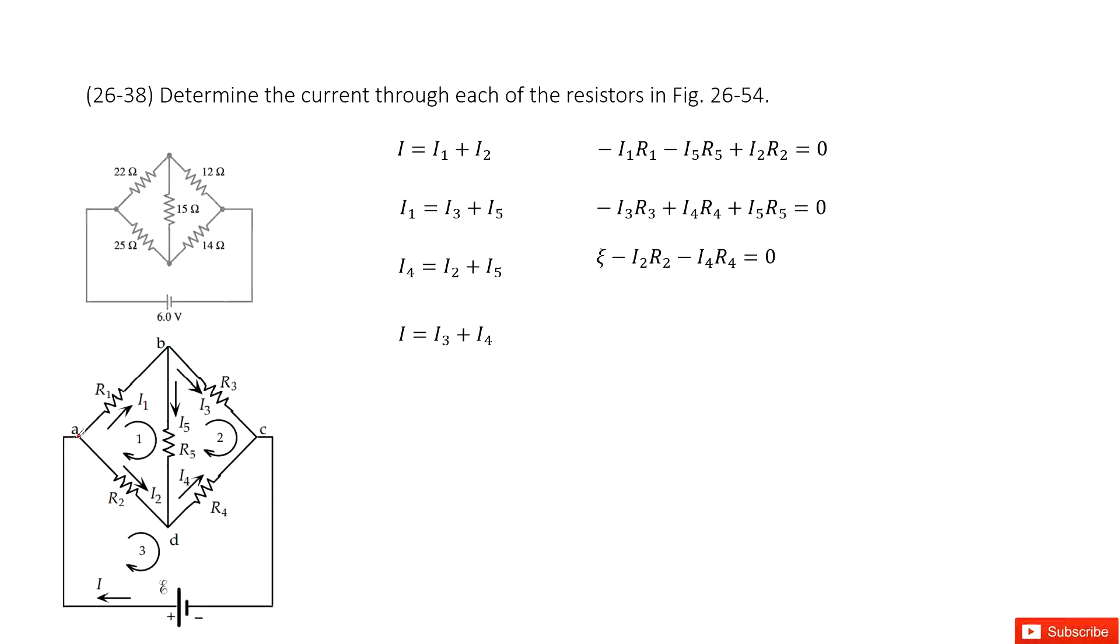So we give the name for each resistor and the current for each branch. First, we look at point A. There, the current flow in is I, flows out I1 plus I2. So we can write it there.